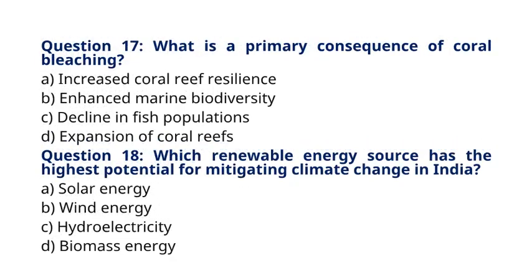Question 17: What is a primary consequence of coral bleaching? A. Increased coral reef resilience. B. Enhanced marine biodiversity. C. Decline in fish populations. D. Expansion of coral reefs. The correct answer to question 17 is option C: Decline in fish populations. Explanation: Coral bleaching leads to the loss of coral reefs, disrupting marine ecosystems and reducing habitats for fish species.